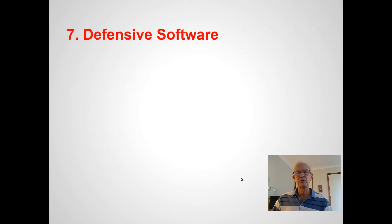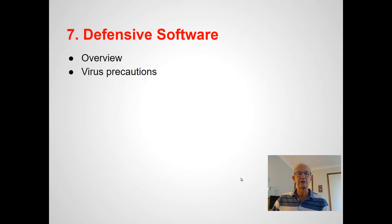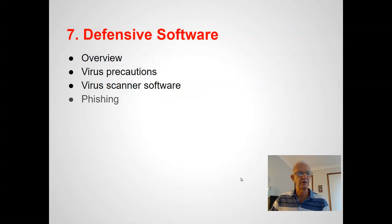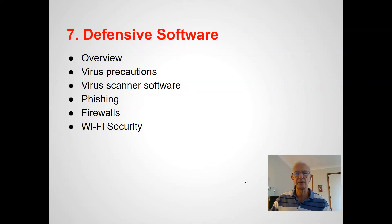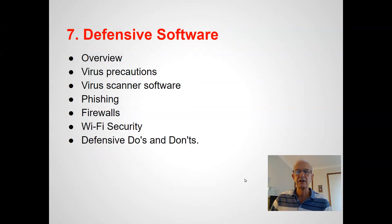After that we're going to look at some defensive software — things like anti-malware software. We're going to look at precautions to prevent you getting viruses, and the virus scanner software that's available. We'll look at the important issue of phishing, which is probably the most prevalent thing happening these days and where most schemes start. We'll look at firewalls and their importance, Wi-Fi security — not everyone has it as secure as it should be — and some definite defensive do's and don'ts.